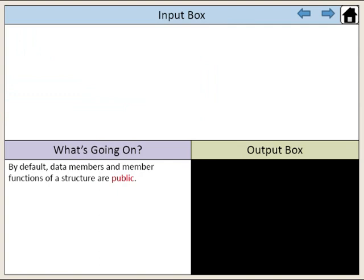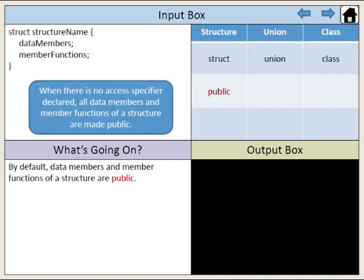By default, data members and member functions of a structure are public. When there is no access specifier declared, all data members and member functions of a structure are made public.